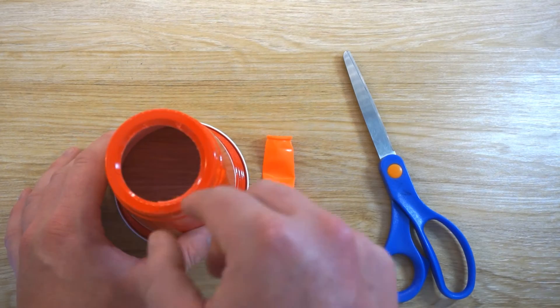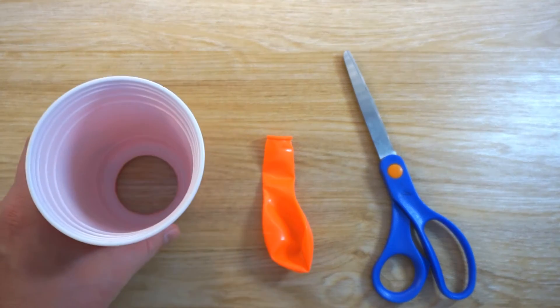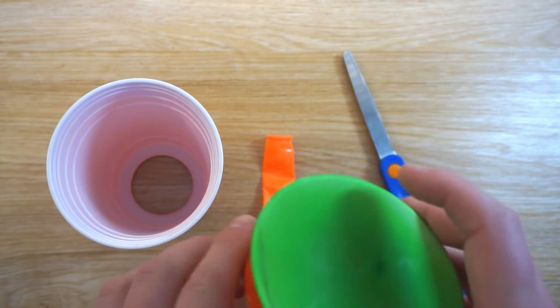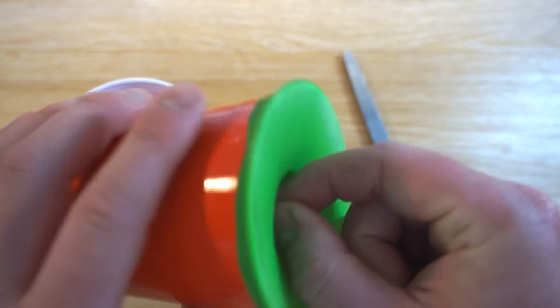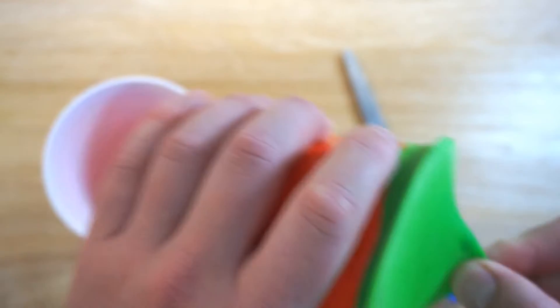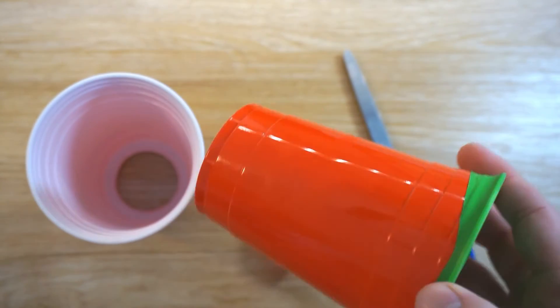Once you have the hole cut out in the bottom of your cup, what you need to do is stretch a balloon over the wide end, the wide opening of the cup. This gives us our membrane that we can flick or pull back and shoot our jets of air.